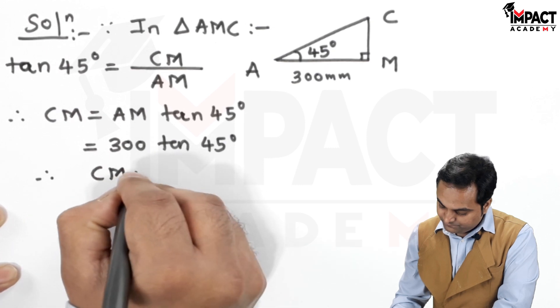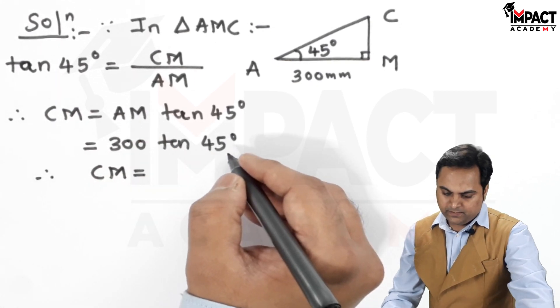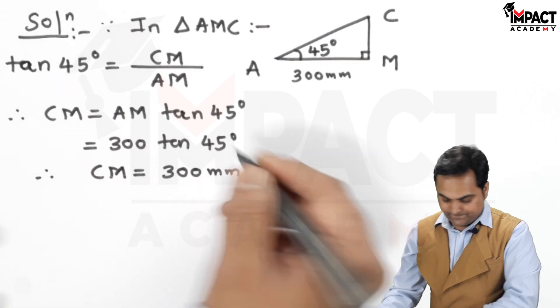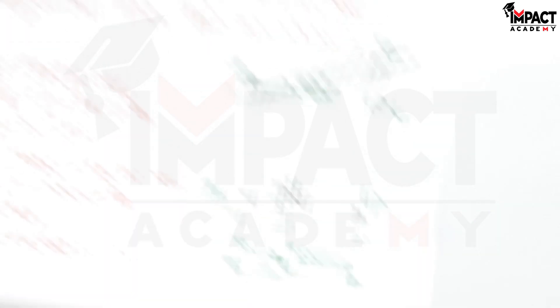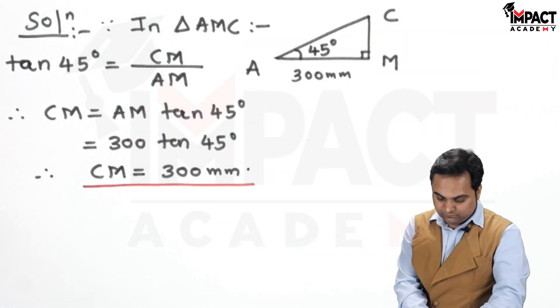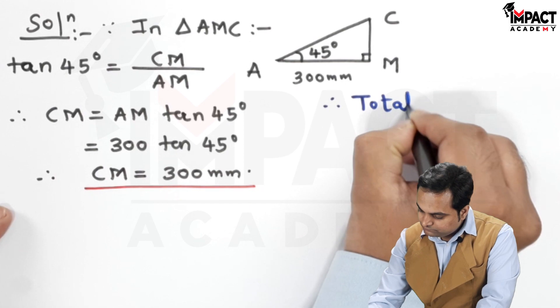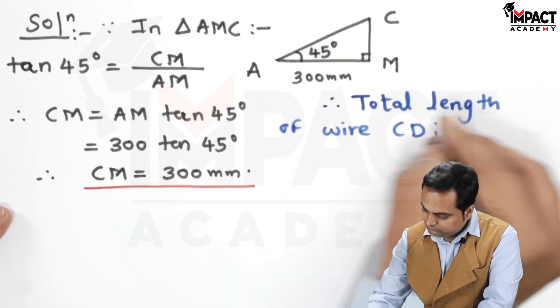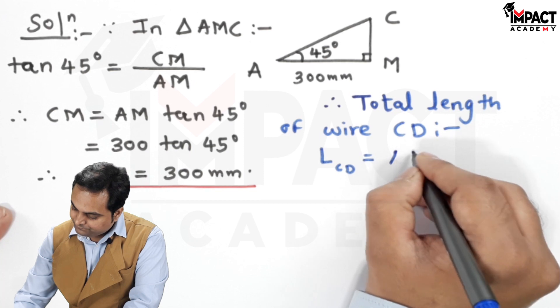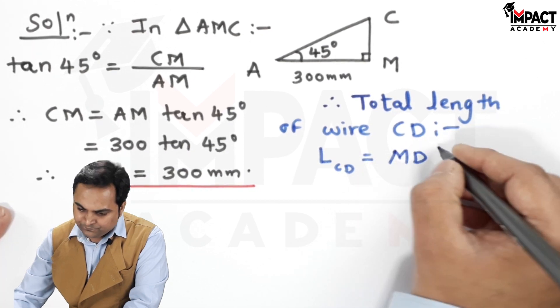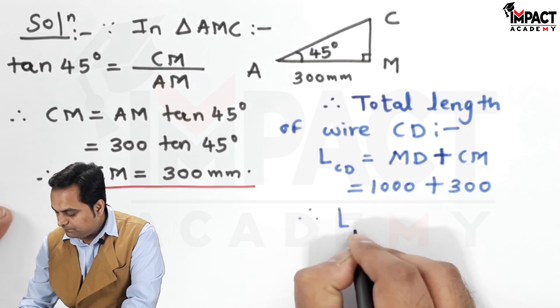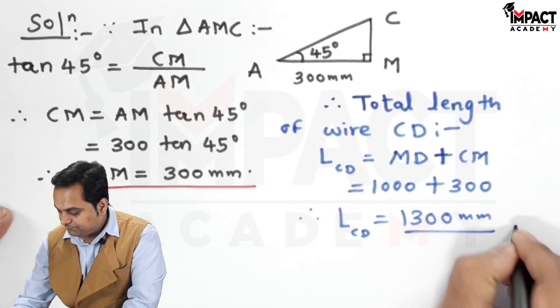Therefore, CM value would come out to be, it is also 300 mm because tan of 45 is 1. Now, once I know the value of CM, in that I will be adding the length of the string AB and that would give me the total length of CD. L suffix CD, that would be, I can say it is AB or MD, both are same, plus CM, 1000 plus 300. So it is 1300 mm.